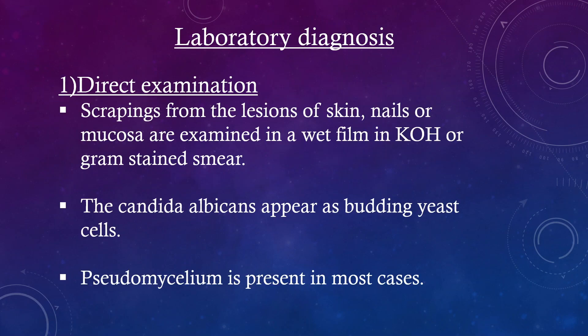Laboratory diagnosis — direct examination: Scrapings from the lesions of skin, nails, or mucosa are examined in a wet film in potassium hydroxide or gram-stained smear. Candida albicans appear as budding yeast cells. Pseudomycelium is present in most cases.